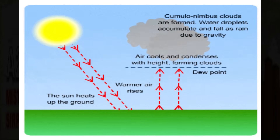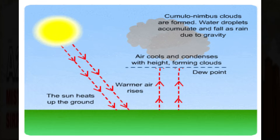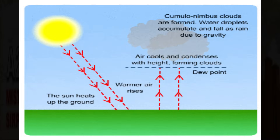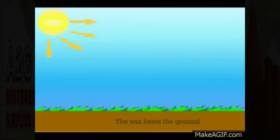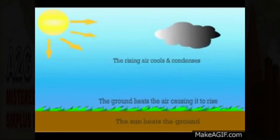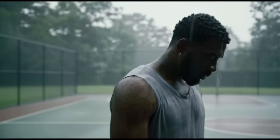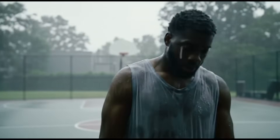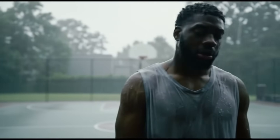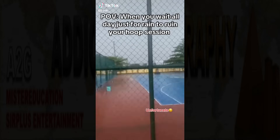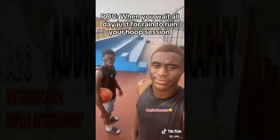So now you know what convectional rainfall is and why it affects us basketballers so much during the summer. It's practically an appointment. They also call it four o'clock rainfall — it comes with the thunder and the lightning and all of that stuff. So now you know about convectional rainfall. I hope you do with that knowledge what you will. Until the next video, this has been Addicted to Geography. Peace.